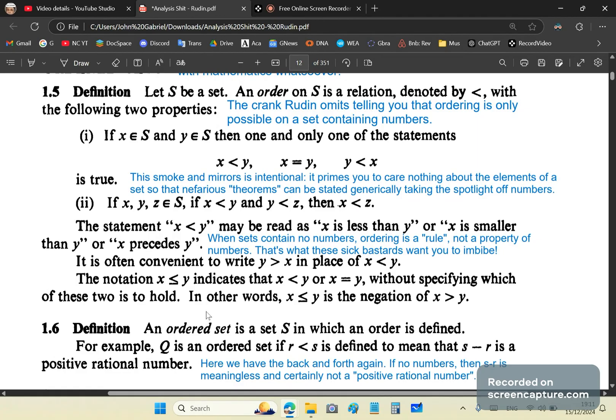See, again, we have algebra symbols for elements, but these elements can only be numbers. There can't be anything else. Yes, you know, your lecturer might tell you you can put an ordering or non-number set, but that's absolute bullshit. Because less than doesn't have, less than greater than doesn't have any connection to sets that don't have numbers. So the statement X is less than Y may be read as X is less than Y or X is smaller than Y or X precedes Y. See, so this X precedes Y is an attempt to make you comfortable with the fact that it doesn't have to mean less than, as it does mean in numbers. So when sets contain no numbers, ordering is a rule. It's not a property of numbers. And that's what this idiot is trying to explain to you.